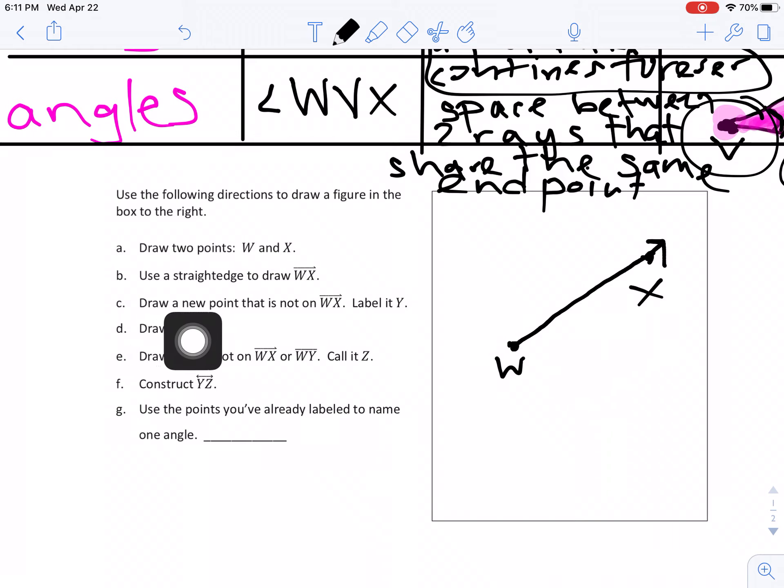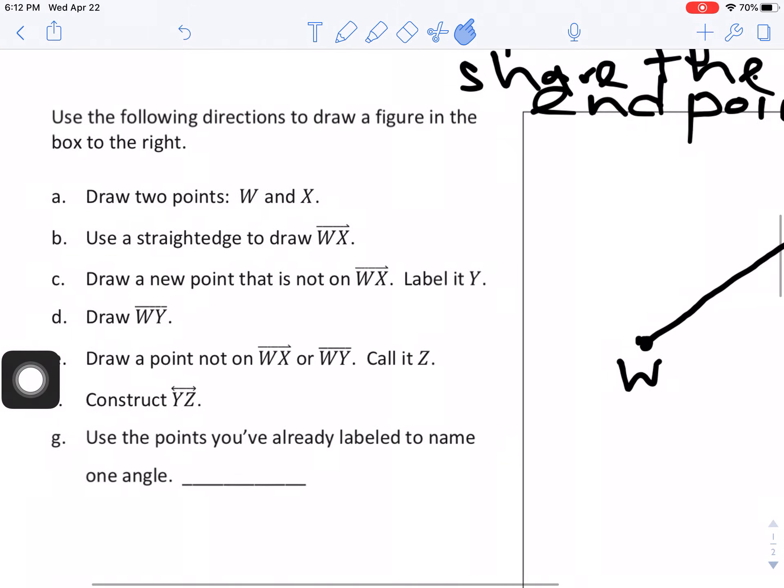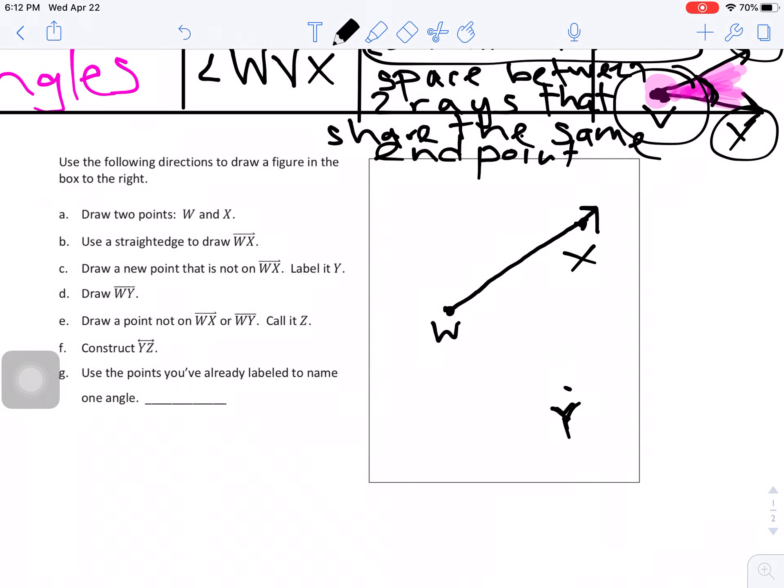And then it says, draw a new point that is not on WX and label it Y. So it can't be on this ray. It has to be somewhere else. So I'm just going to put it down here, point. And I have to label it Y. Then it says, draw WY. And I'm going to zoom in so you notice there's no arrows on either side, which means it is a line segment. So I don't want it to go past my dots, my points. I'm going to make my point a little bigger for Y so I can't go past it. It's kind of tricky to draw on the iPad. So there's my line segment, WY.